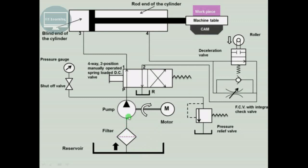The other components of this hydraulic circuit are as usual. We have the reservoir; from the reservoir the fluid enters the filter and gets filtered. When the pump is driven by the electric motor, the fluid is pumped from the reservoir. There is a four-way two-position manually operated spool direction control valve with two positions: left envelope and right envelope. Port P is the pump port, R is the reservoir port, and ports 1 and 2 lead to the blind end and rod end of the cylinder respectively. From port 3 fluid enters the blind end of the cylinder, and from port 4 it goes to the reservoir.